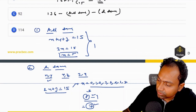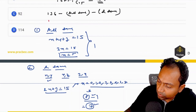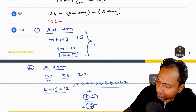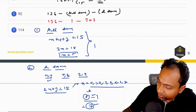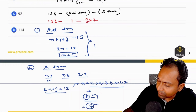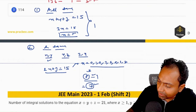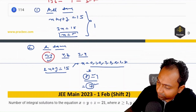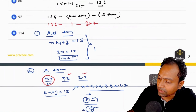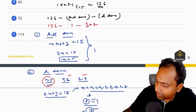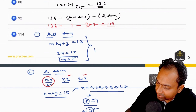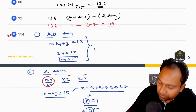Putting the values together: 136 minus 1 (all-same) minus 3×7 (two-same cases, 21 total) gives 136 − 1 − 21 = 114, which is option C.